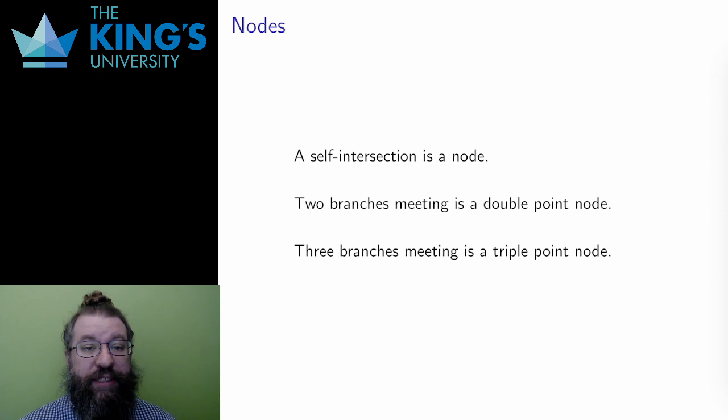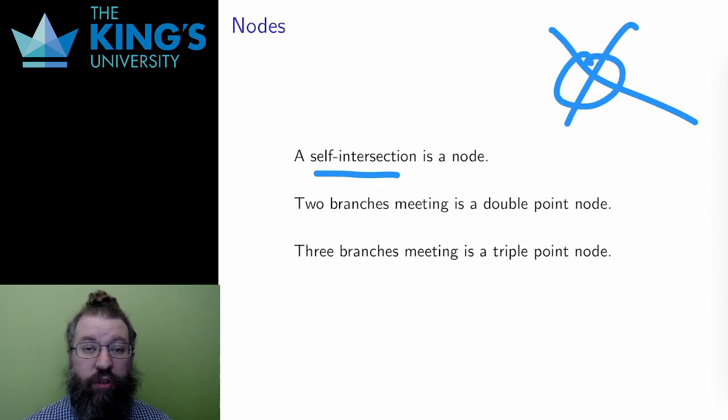The previous example was the self-intersection of two pieces of the algebraic plane curve. A self-intersection like this is called a node. If two pieces of the curve, like the two lines in the previous example, meet at a point, that is called a double-point node.